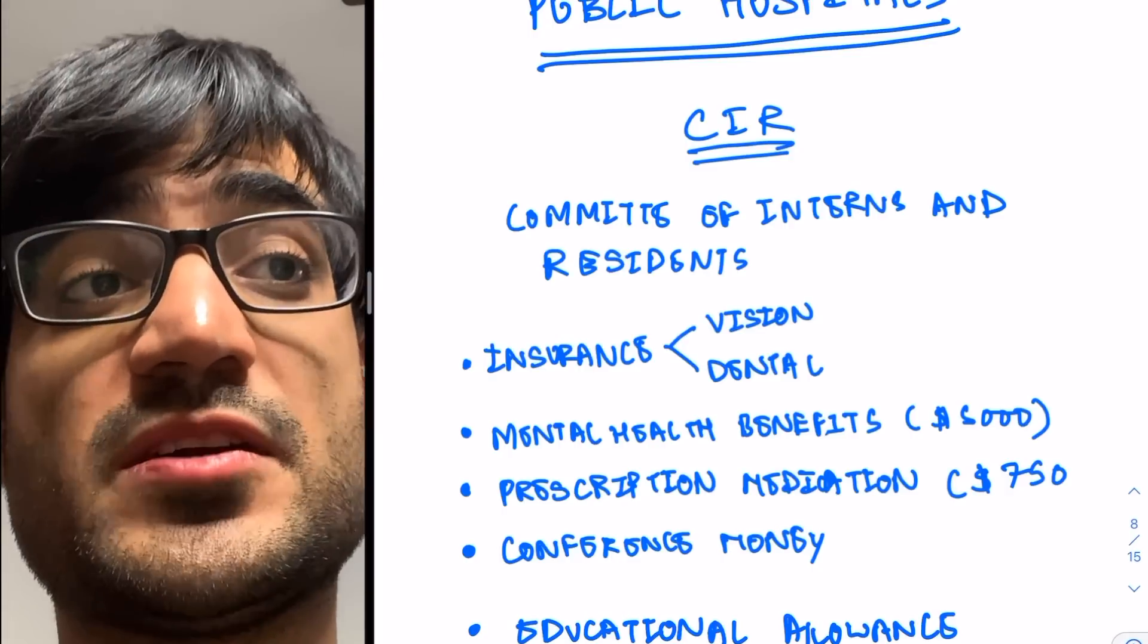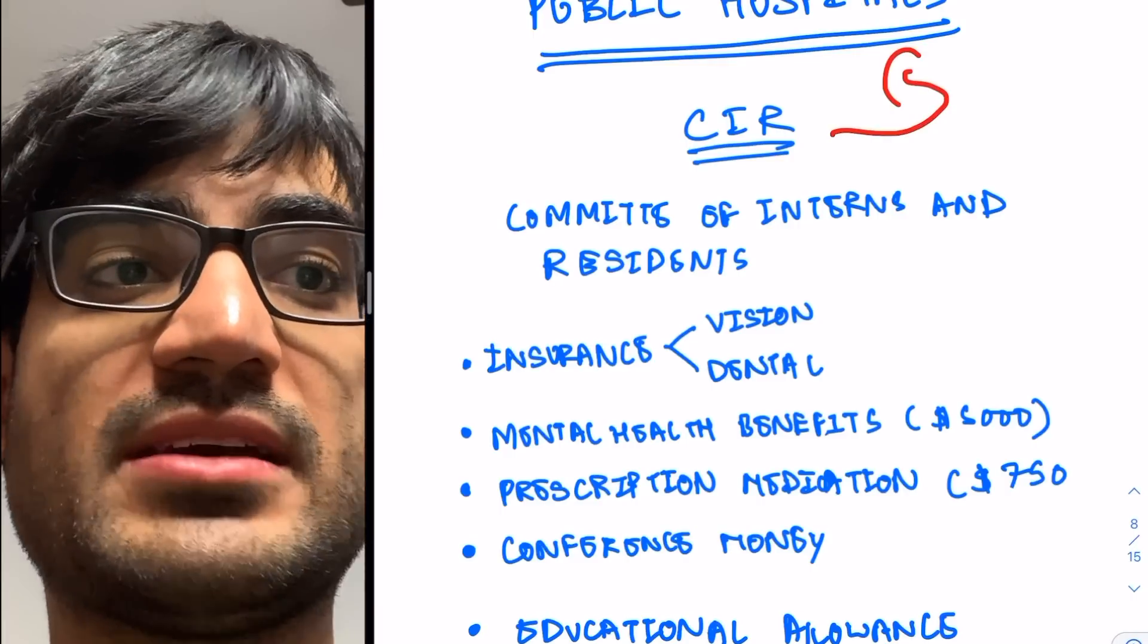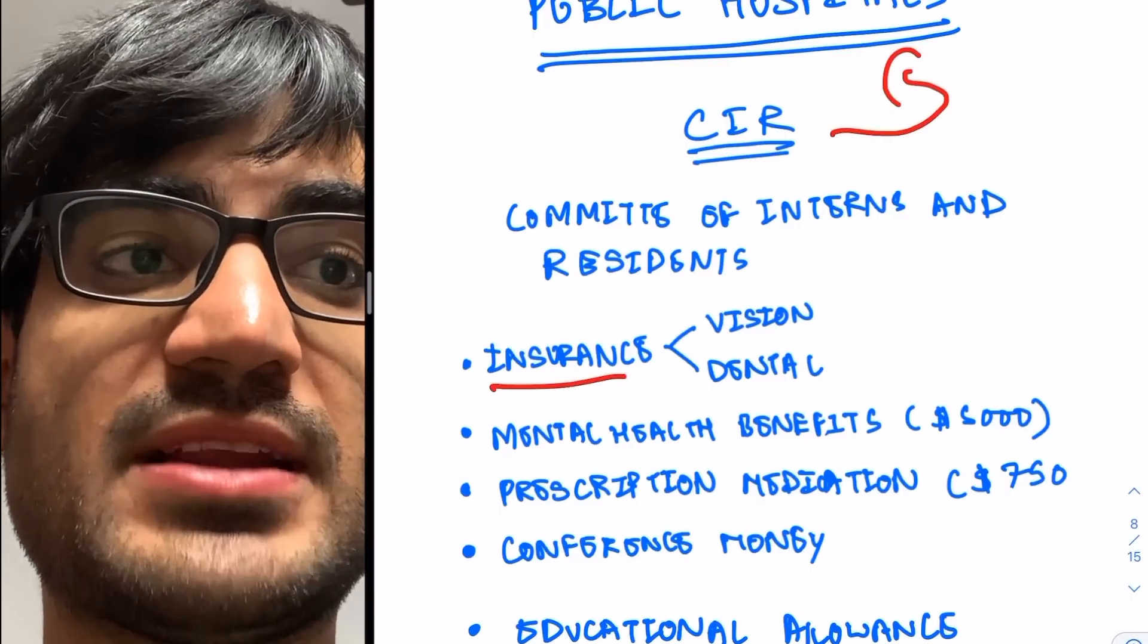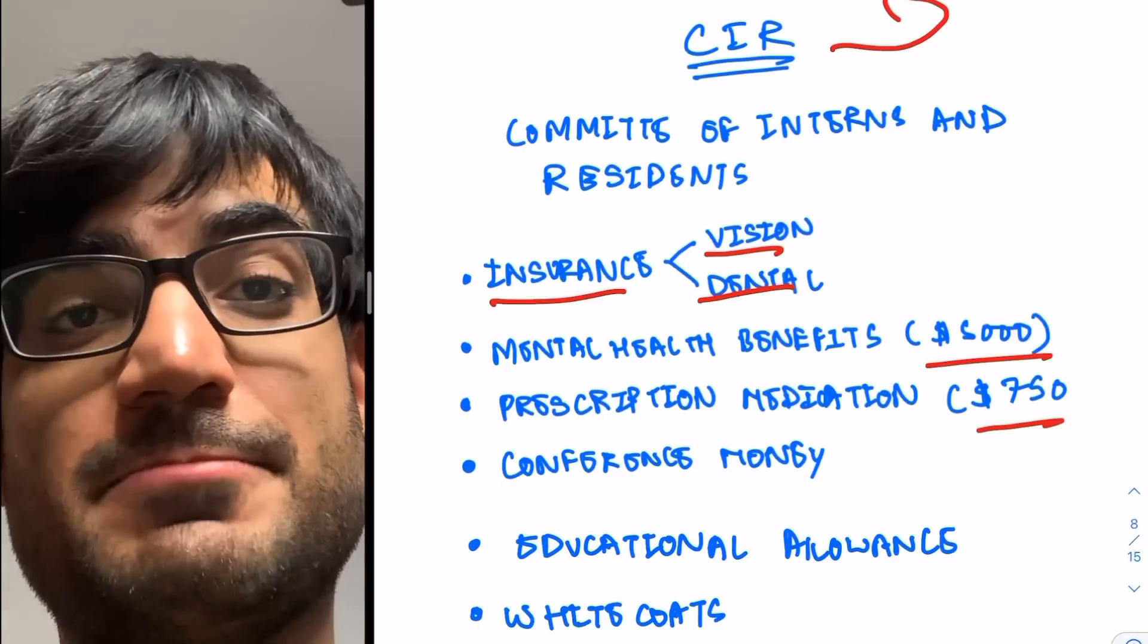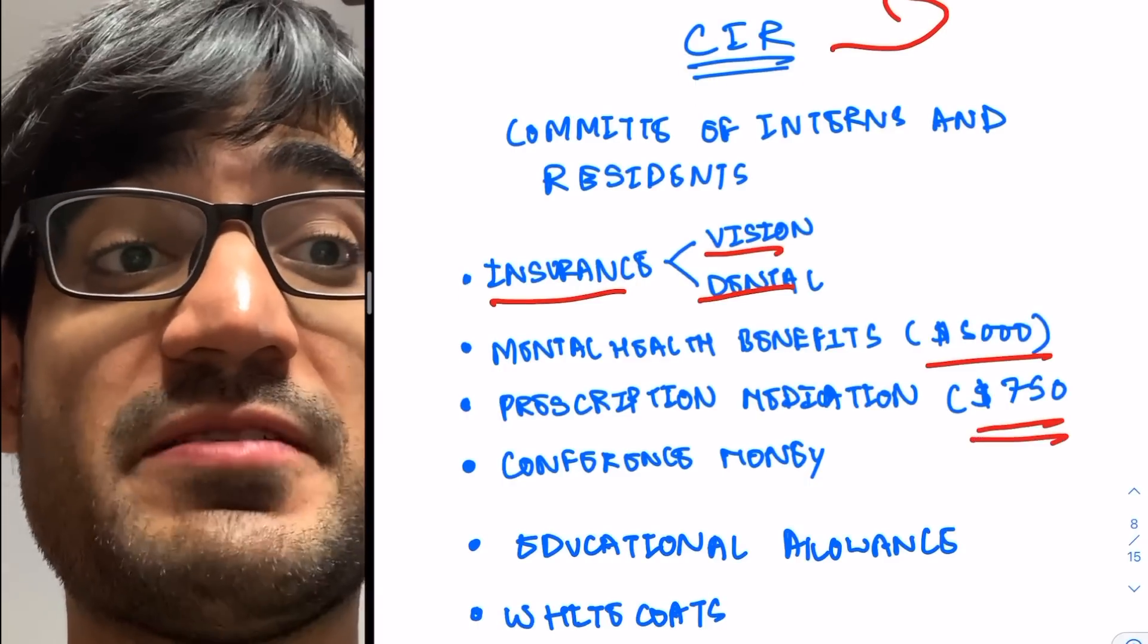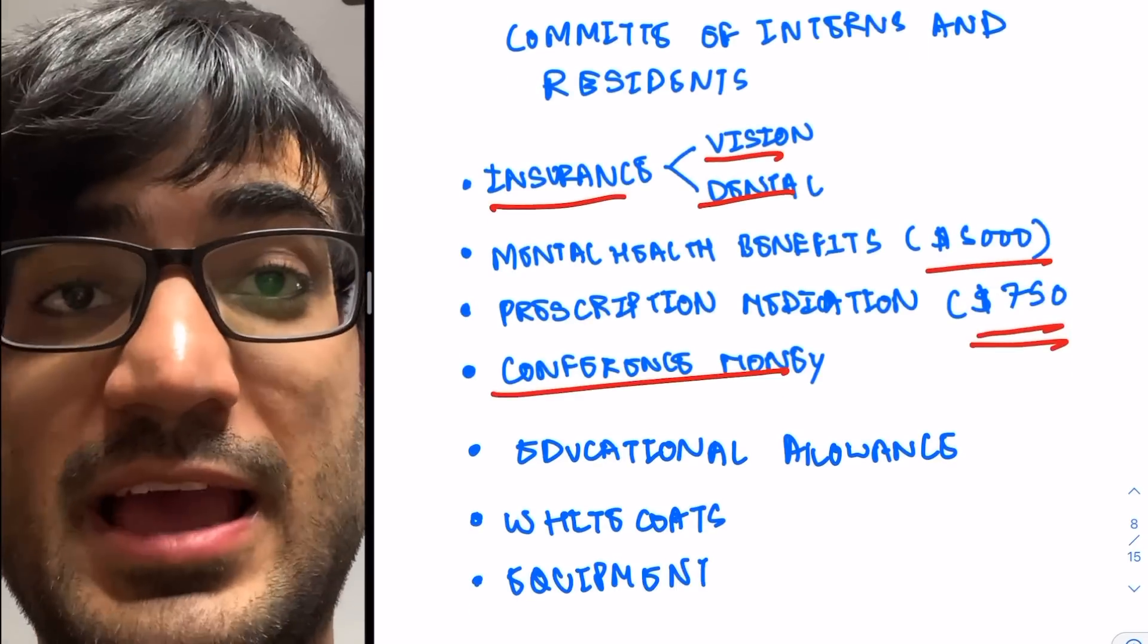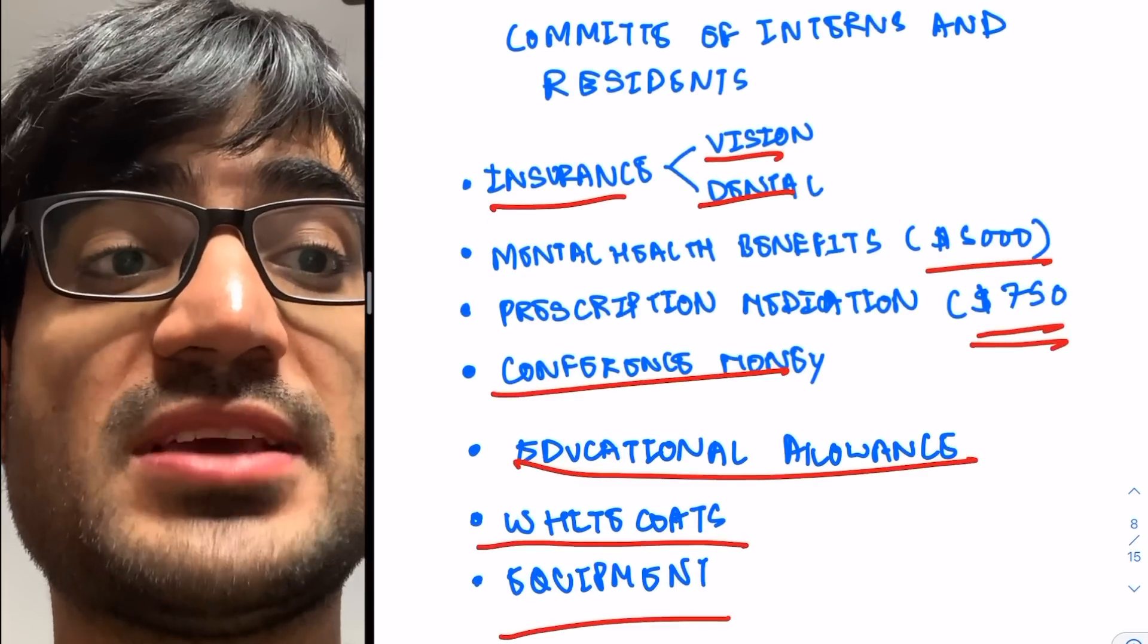And it is mainly associated with public hospitals. It helps advocate for certain insurance plans, like vision and dental plans. Mental health benefits of upwards of $5,000. Prescription medication benefits of upwards of $750. They also provide conference money. They also help you get educational allowance, white coats, equipment.